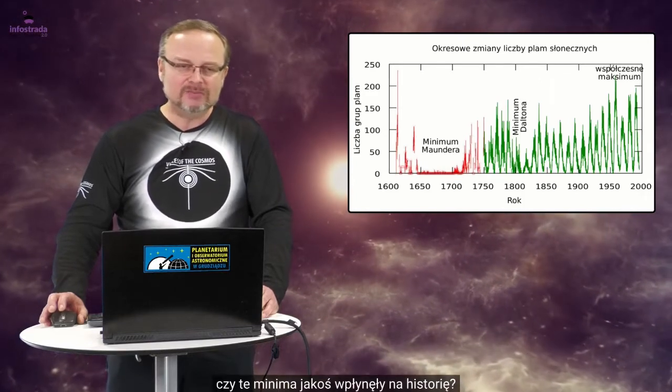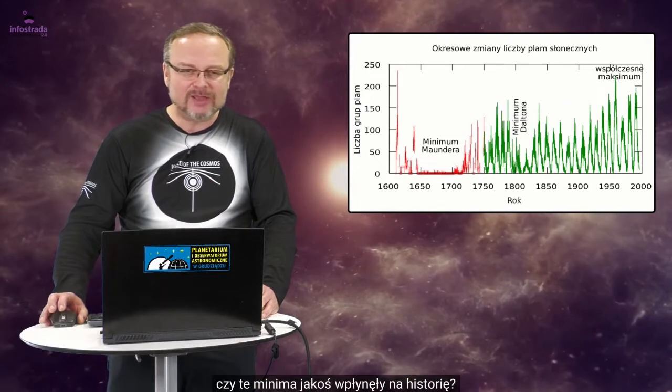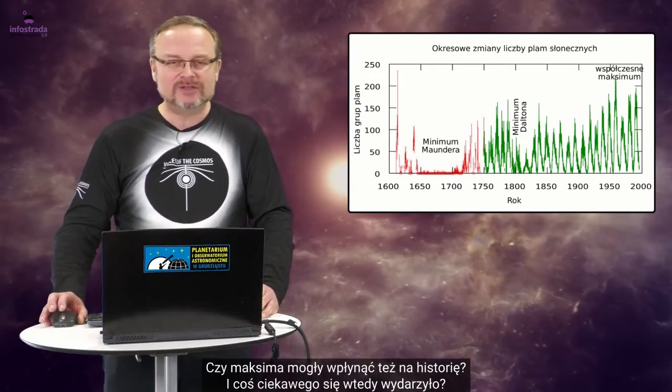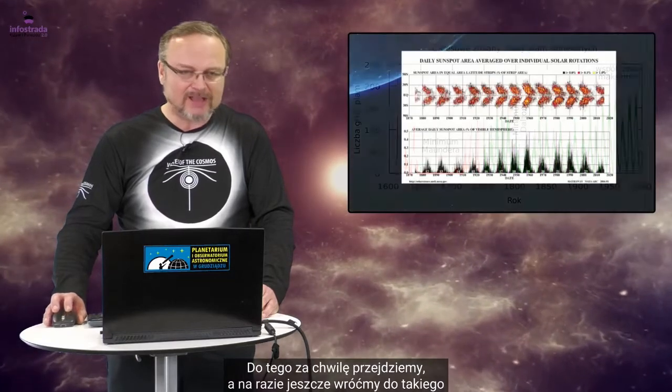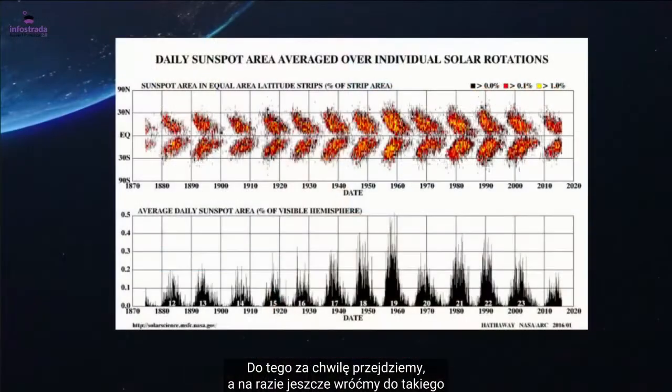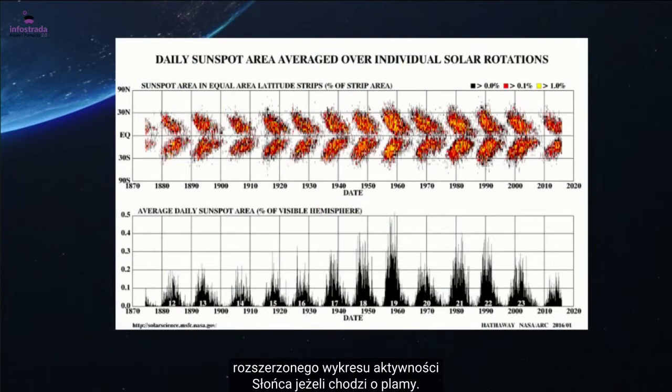No właśnie, czy te minima jakoś wpłynęły na historię? Czy maksima mogły wpłynąć też na historię i coś ciekawego się wtedy wydarzyło? Do tego za chwilę przejdziemy, a na razie jeszcze wróćmy do takiego rozszerzonego wykresu aktywności Słońca, jeżeli chodzi o plamy.